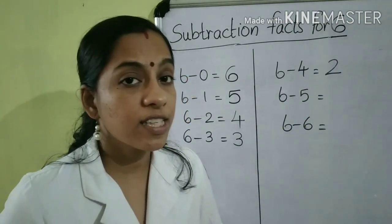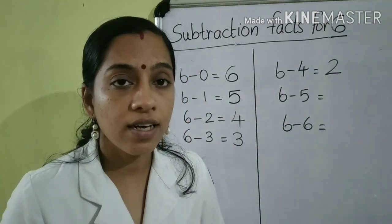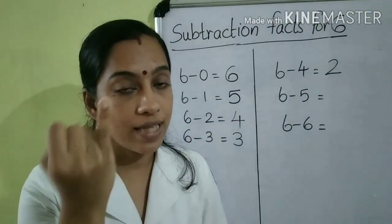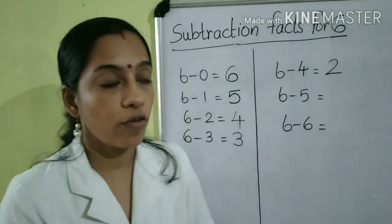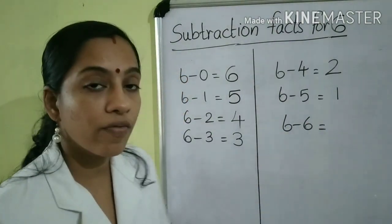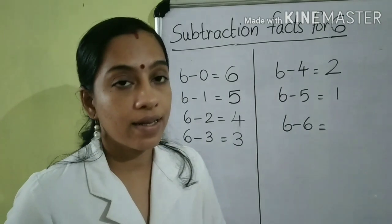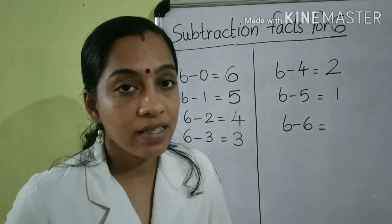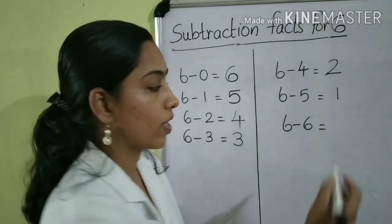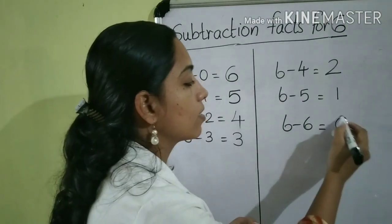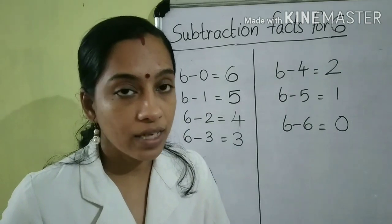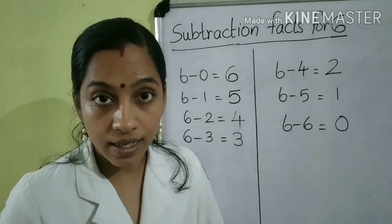Then, 6 minus 5 — what will be the answer? Take 6 fingers and fold 5 fingers. The answer is 1. The last one, very simple: 6 minus 6. What will be the answer when we subtract 6 from 6? It's 0. Children, these are the subtraction facts for 6. Is it clear?